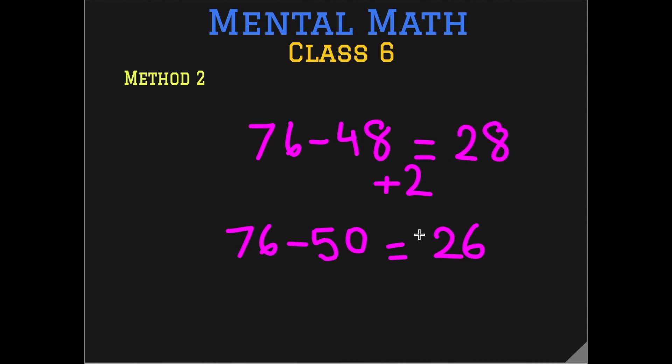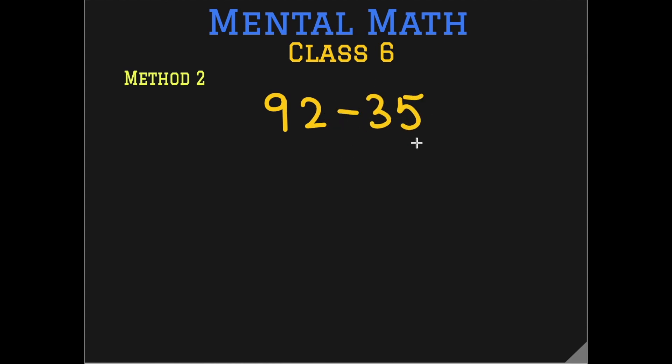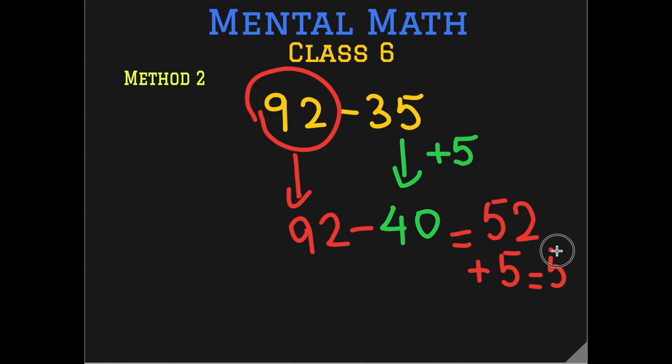Let's do one last question so that you clearly understand what's going on in method 2. So 92 minus 35. 35 we have to take it up. We need to add a 5 to it to make it a 40 and 92 stays the same. So 92 minus 40 and again either backward counting or just subtract 9 minus 4 is 5 and 2 minus 0 stays the same. Add the 5 to 52 so we get 57 and this is the final answer 92 minus 35 is 57.